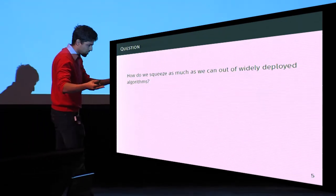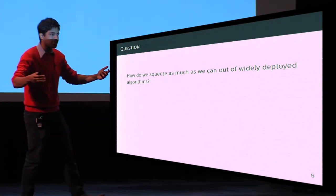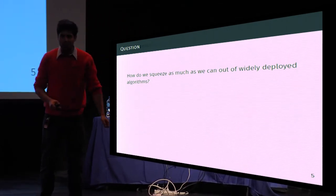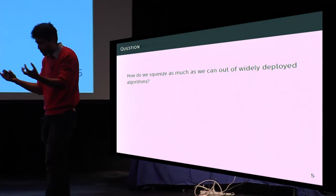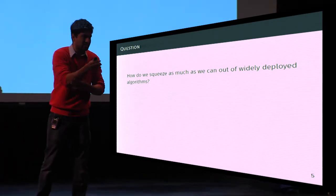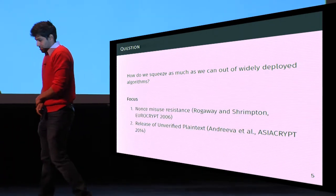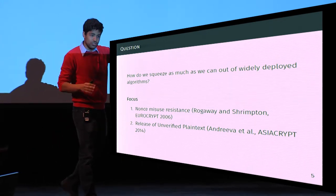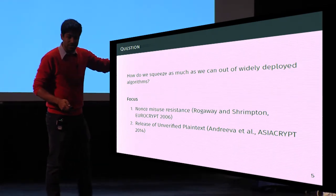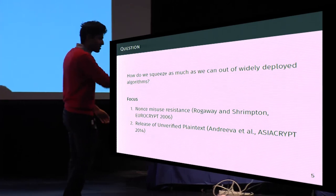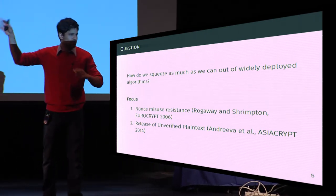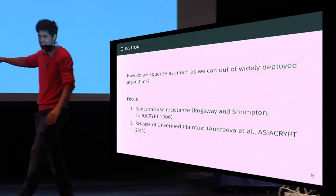Our research motivation was: given the long deployment time and all these new settings, how do we squeeze as much as possible out of currently deployed algorithms and get new settings into practice faster? We focused on two settings: nonce-misuse resistance, originally formalized by Rogaway and Shrimpton at EuroCrypt 2006, and the release of unverified plaintext setting.